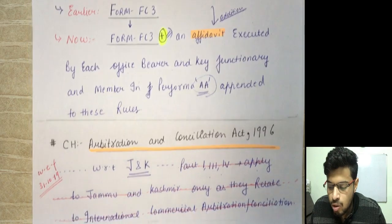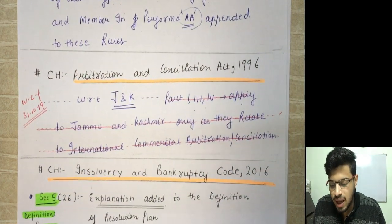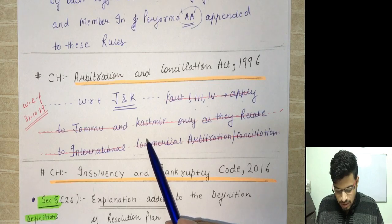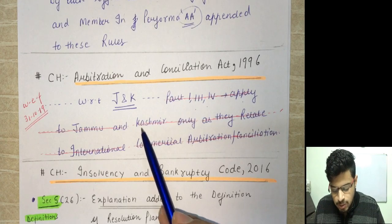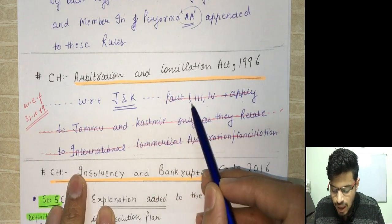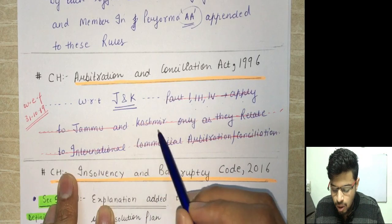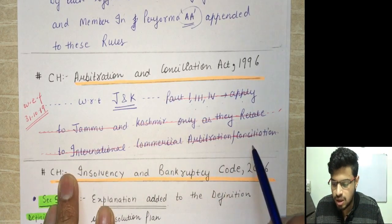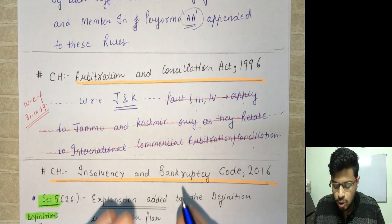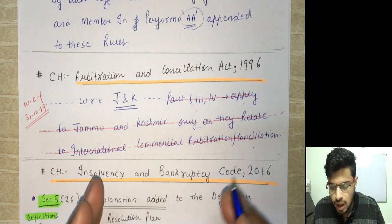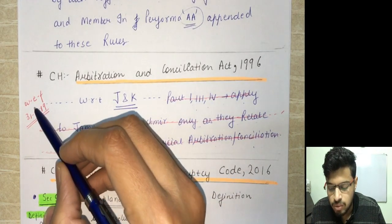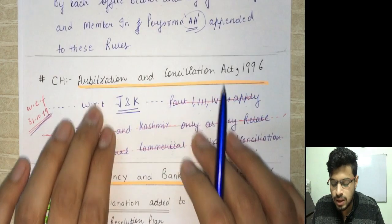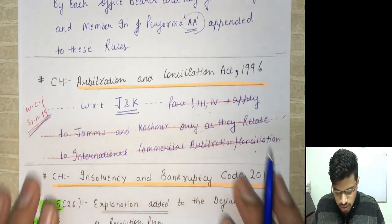Coming to the Arbitration and Conciliation Act: earlier, Parts 1, 3, and 4 would apply to Jammu & Kashmir only as they related to international commercial arbitration and conciliation. Now, with effect from 31st October, the special J&K status has been resolved and it has been excluded — this is essentially a procedural/constitutional change.